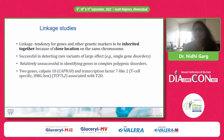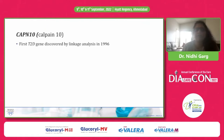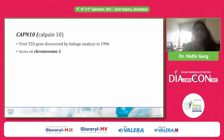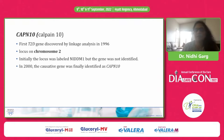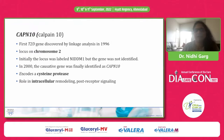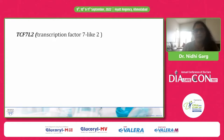Calpain 10 is the first type 2 diabetic gene ever discovered by linkage analysis, in 1996. It is located on chromosome 2, and the locus was initially labeled NIDDM1, but eventually in 2000 the causative gene was identified as CAPN10. It encodes a cysteine protease and has a role in intracellular functioning, intracellular remodeling, and post-receptor signaling.